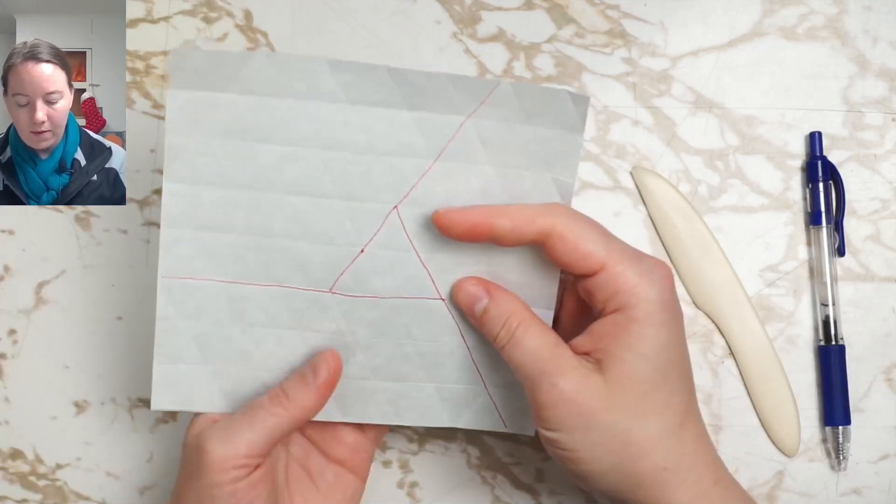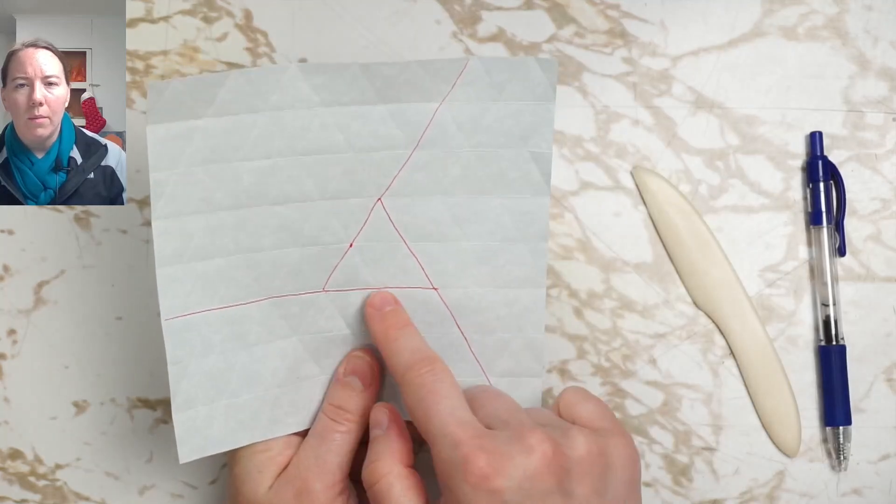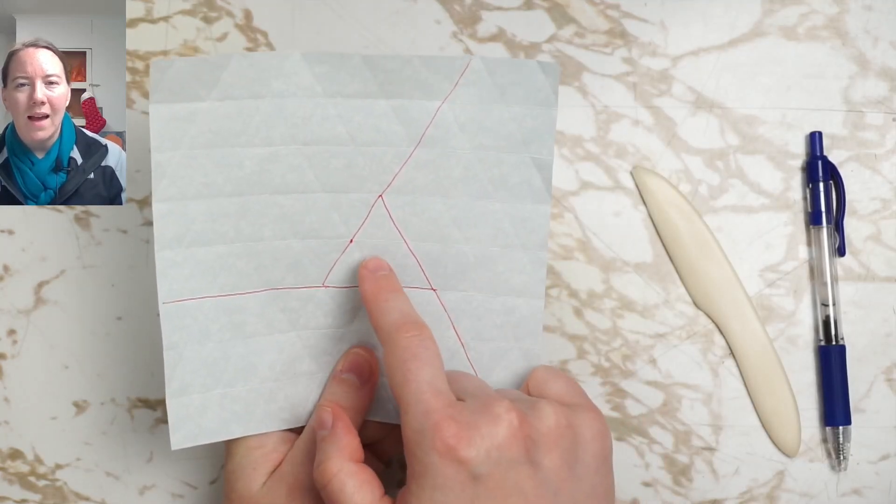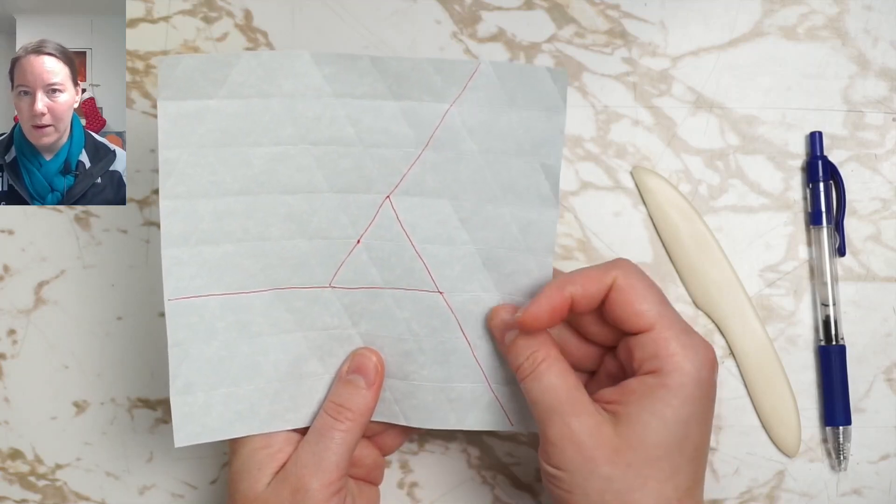And notice that this triangle of two grid spacings per side has at its center a grid triangle, so we couldn't put it exactly in the center of the paper.